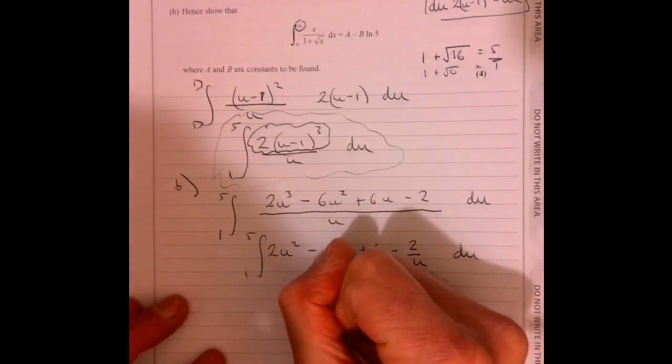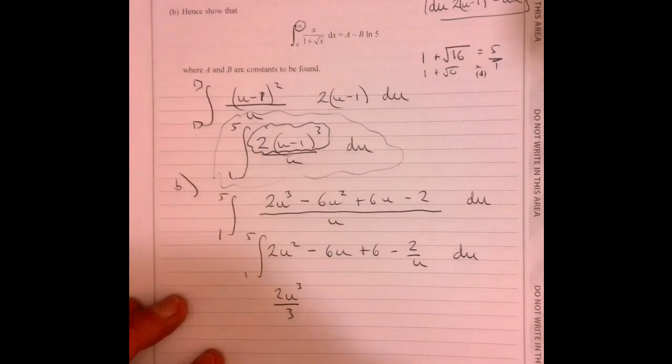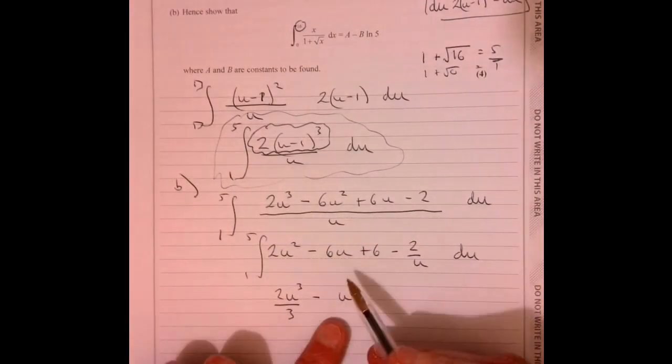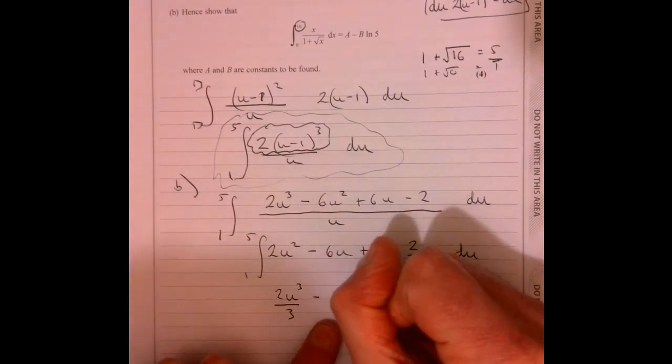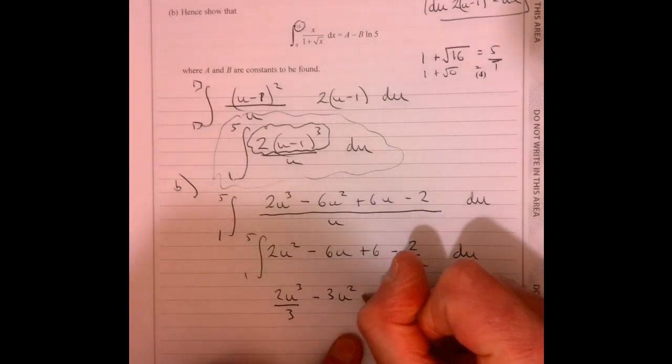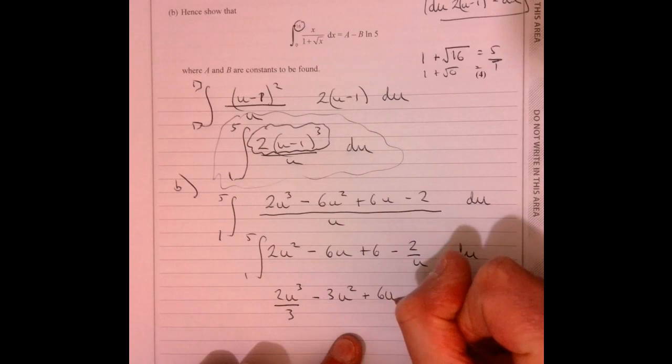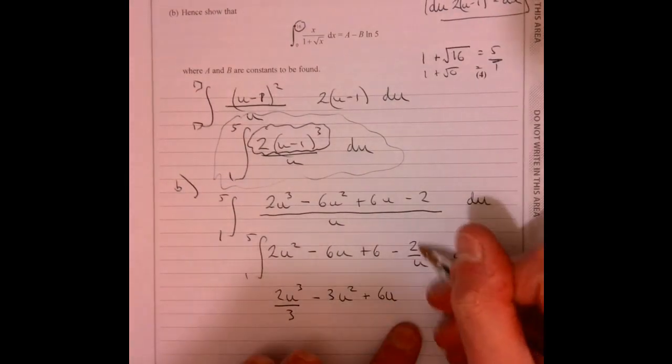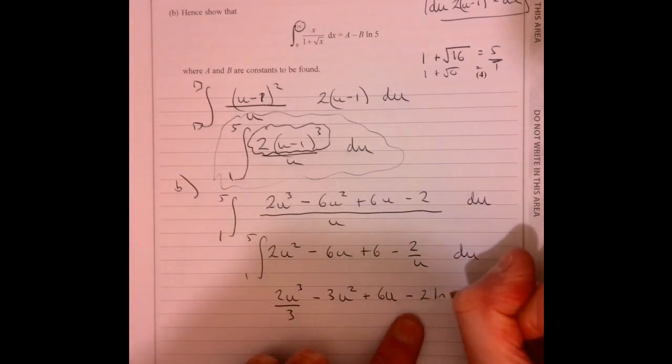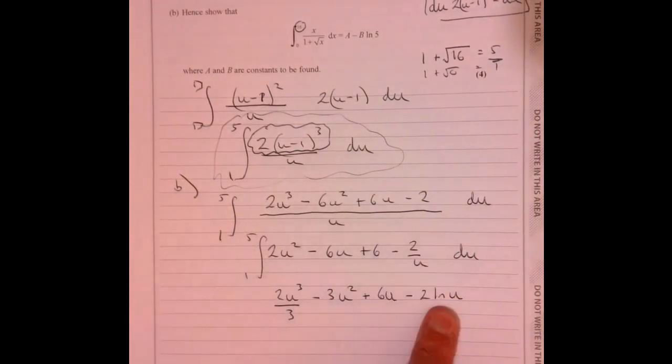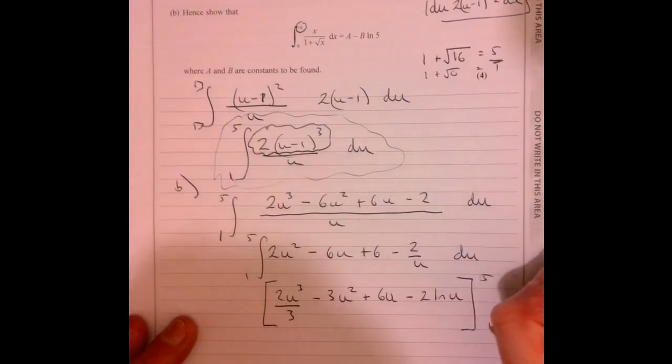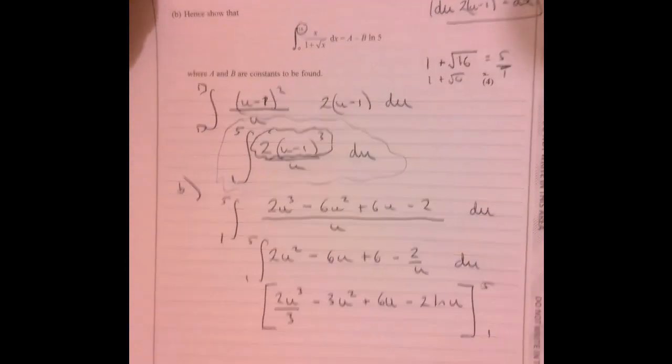So if I integrate this, raise the power, divide by it as well. So I've got, I raise that power and then divide by the 2 as well. 6 over 2 is 3. And then we've got plus. So that'll just be 6u there. And should know, if I integrate this, that's just going to be 2 multiplied by ln u. If you're not sure about that, then go and have a look at those questions. All right. There we go. So let's pop in our limits. 5 and 1 there.